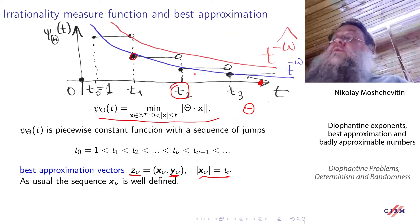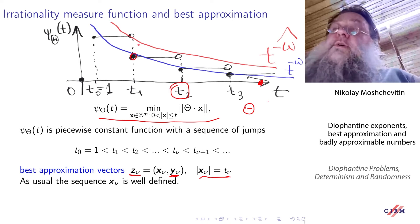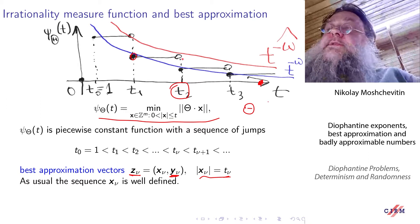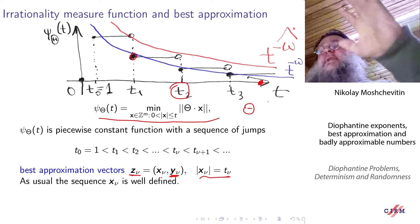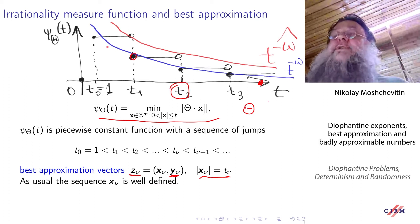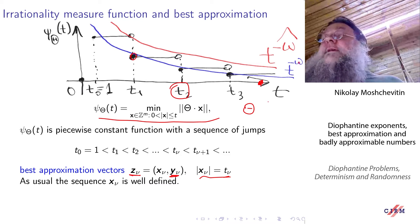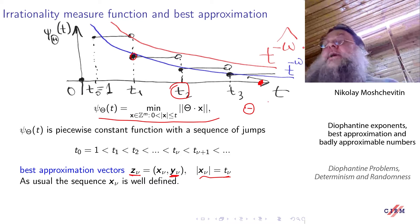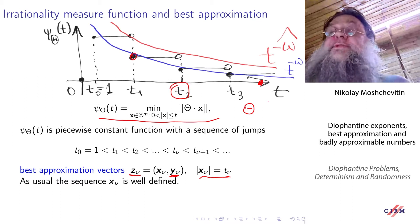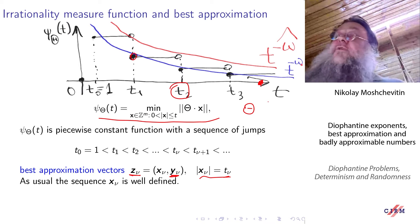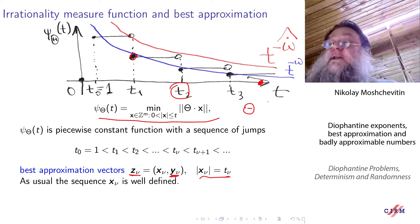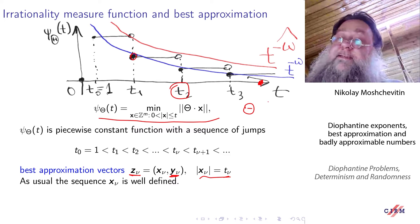At this picture I also draw two curves. Here are points with white interior, and this is the curve t to the power minus omega-hat, which is in some sense close to these points. And here is a blue curve t to the power minus omega, which corresponds to these black points. The exact definitions of omega and omega-hat will be on the next slide.